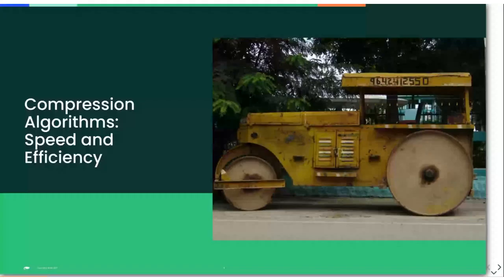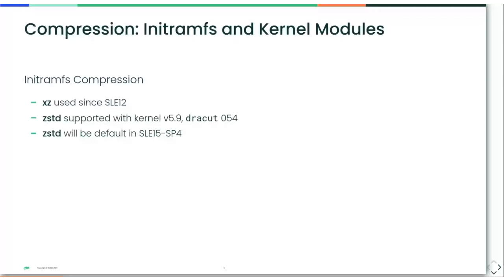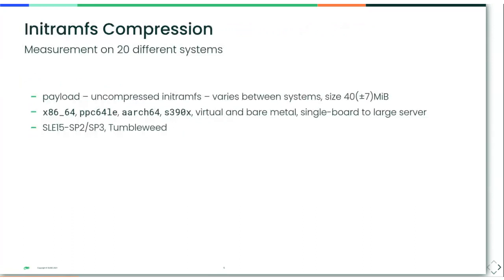In the first part I'll talk about compression algorithms, covering both compression of the initramfs and compression of kernel modules. For the initramfs, we have been using xz since SLE 12 GA. Quite recently, since kernel 5.9 or dracut 054, zstd is supported upstream as an alternative, and we are working towards introducing this as default in SLE 15 SP4.